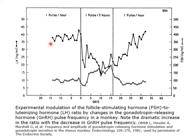A similar experiment started at one pulse per hour, then slowed to one pulse every three hours, then reversed back to one pulse per hour. LH levels dropped a little — not as much as before — and then picked up again. FSH levels, however, if anything went up, and then dropped back down when the frequency returned to the control rate. So the take-home message is that the frequency of GnRH pulses affects pituitary sensitivity, and it affects the sensitivity to LH and FSH in different ways.